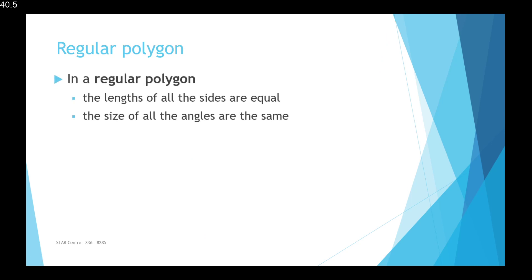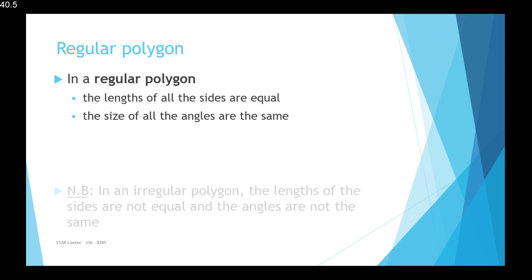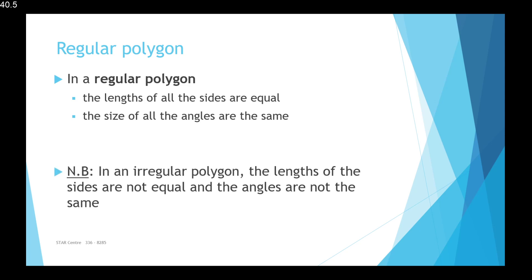In a regular polygon, the lengths of all the sides are equal and the size of all the angles are the same. Which means that for an irregular polygon, it would be the opposite — the lengths of the sides would not be equal and the angles would not be the same.